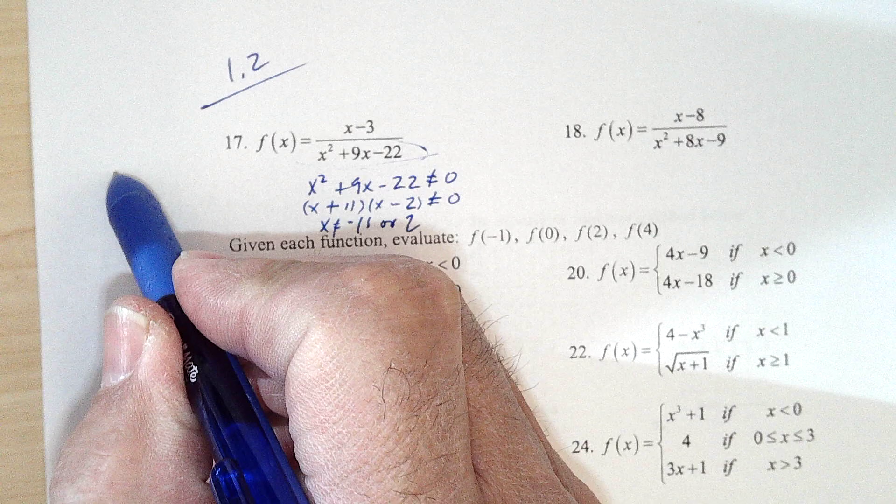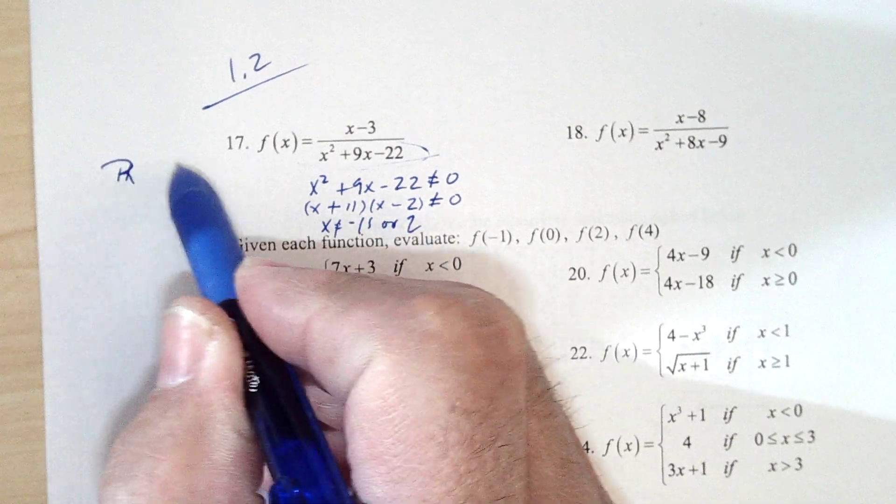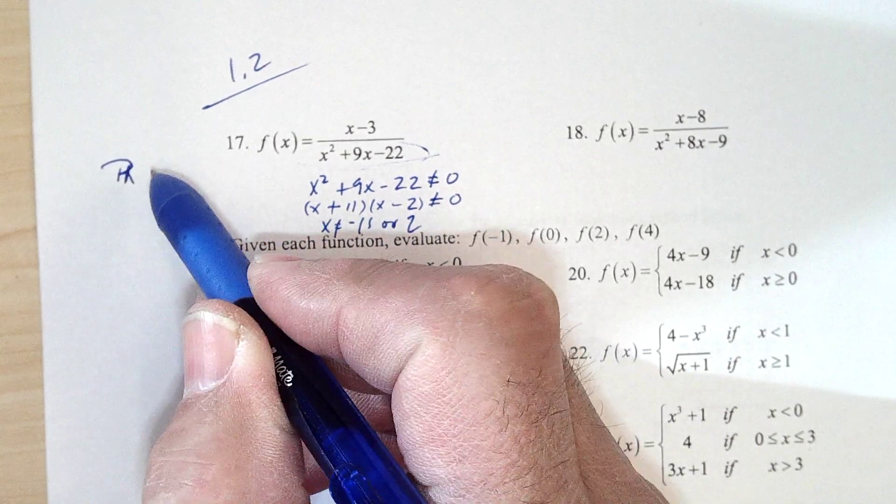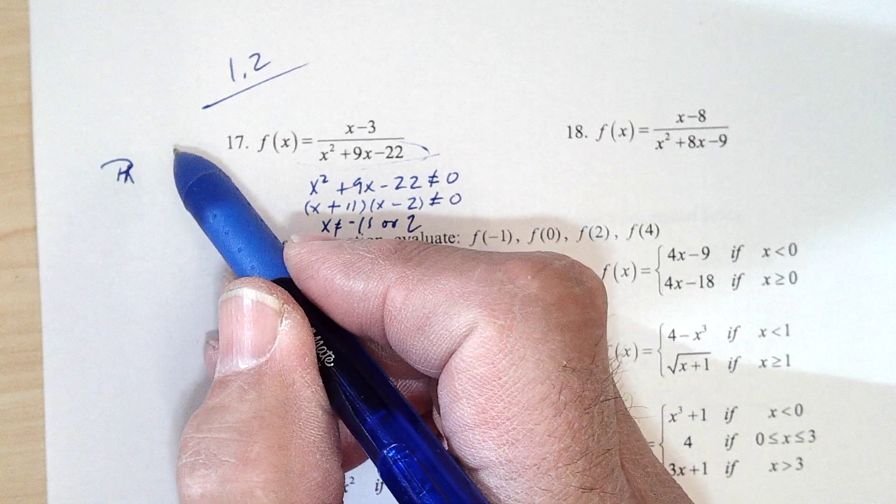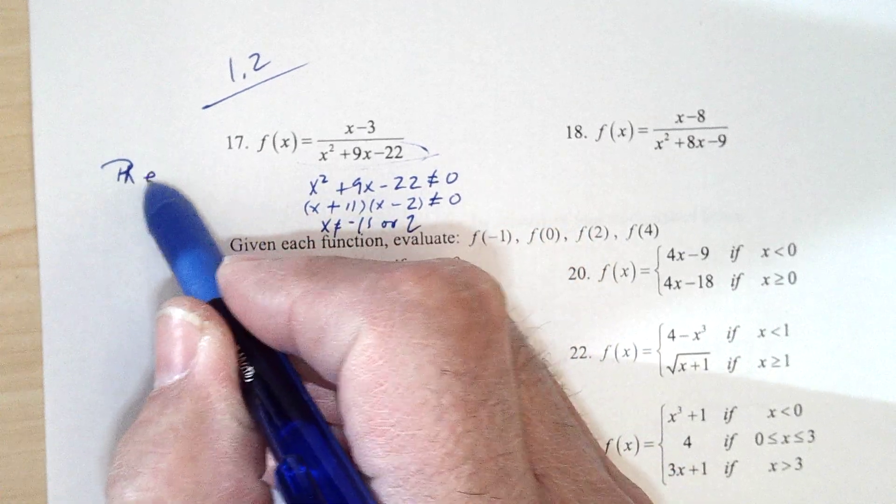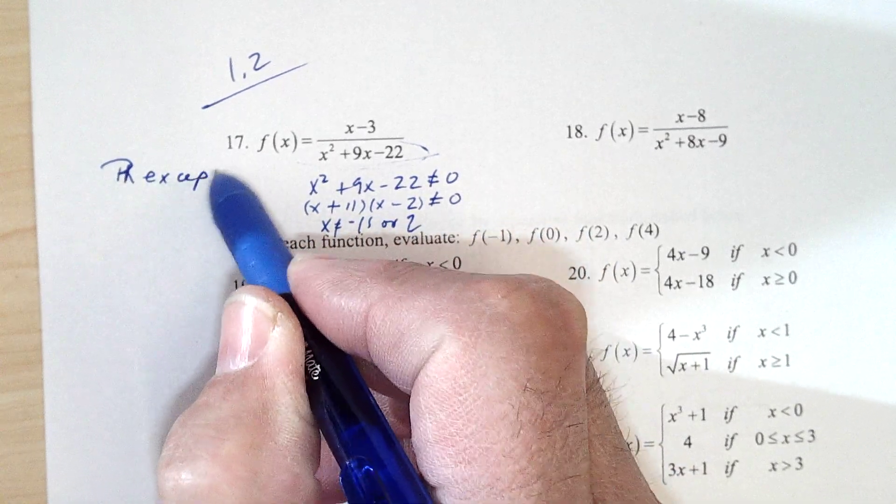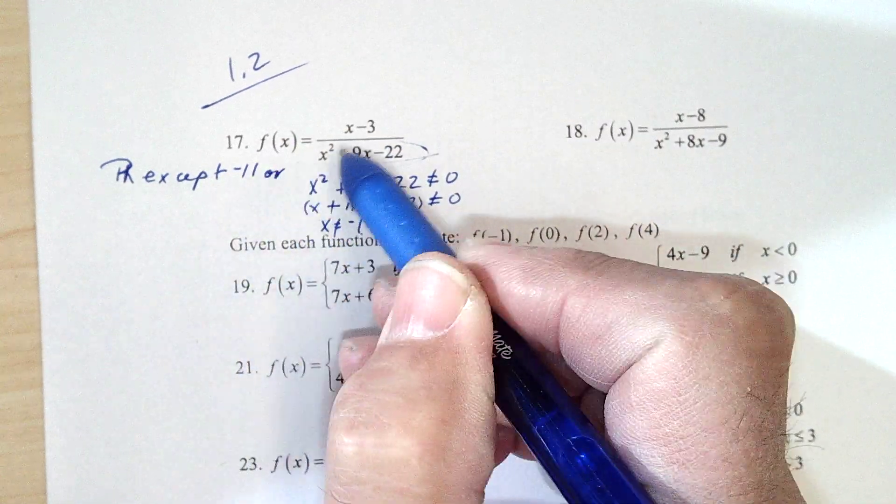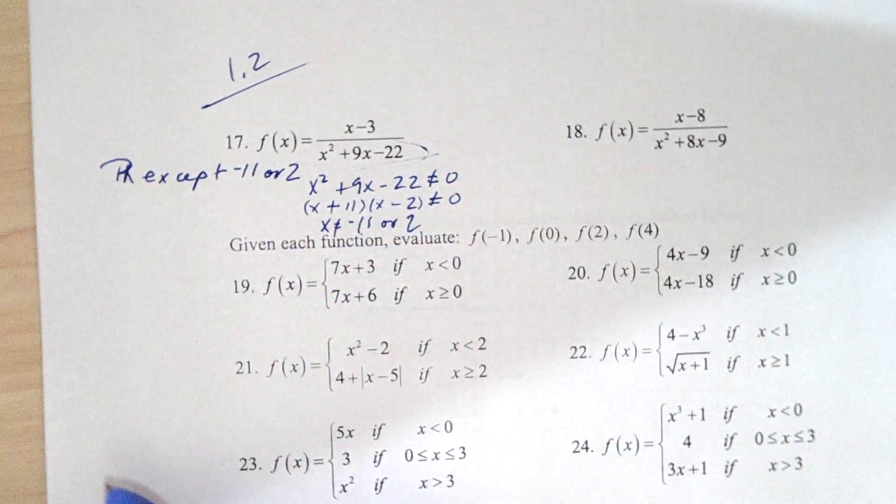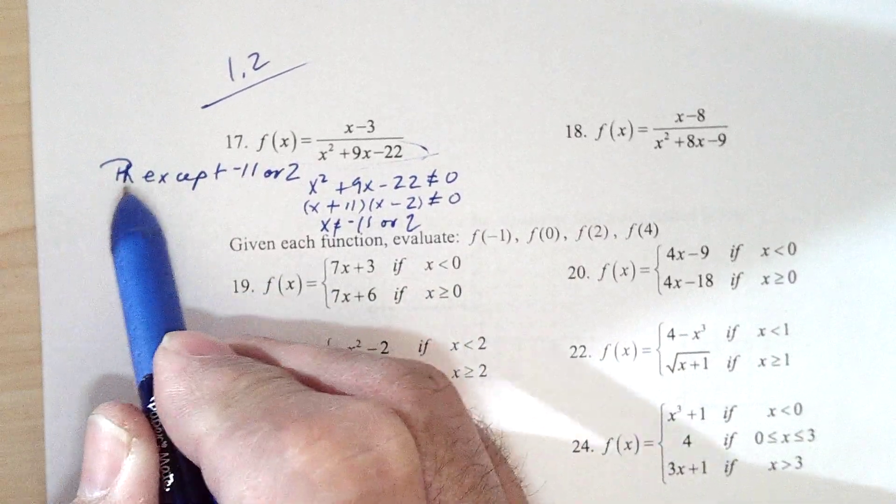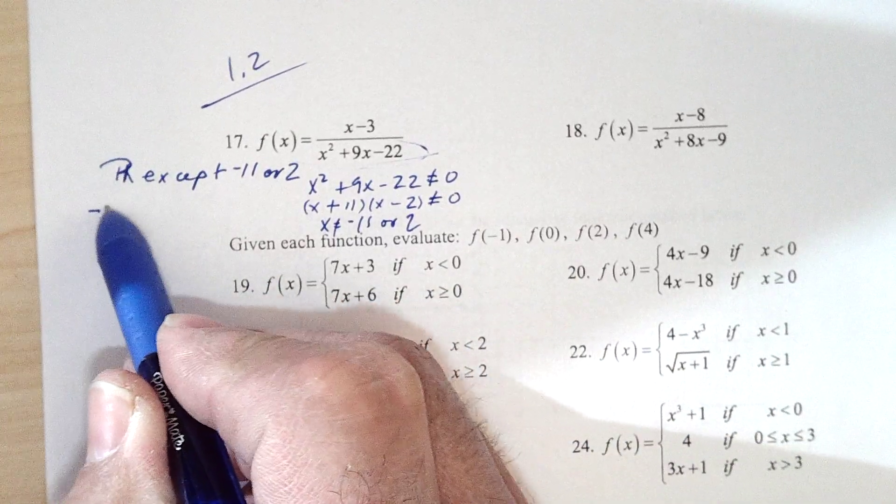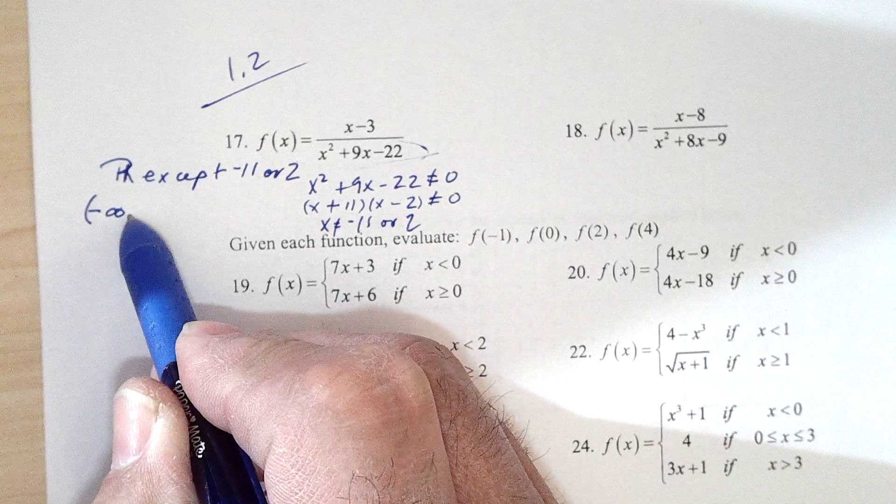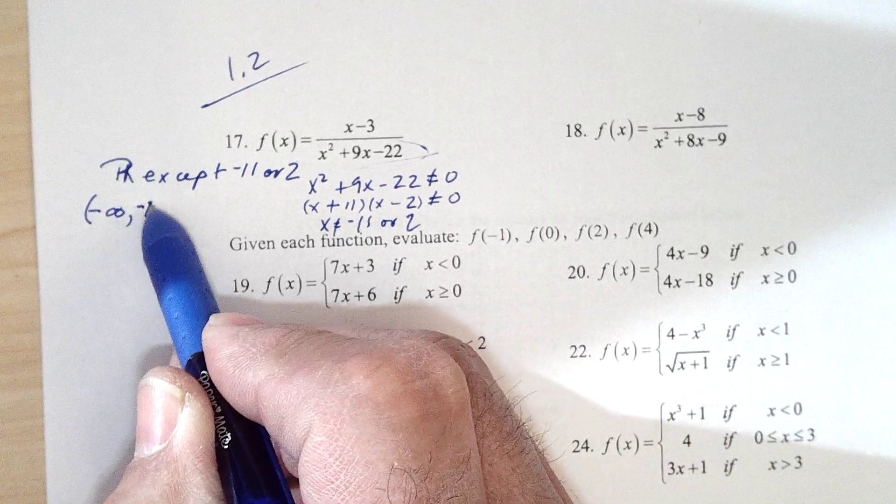So the domain would be all reals, excuse me, except negative 11 or 2.